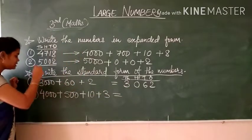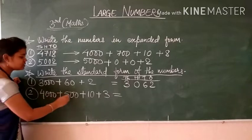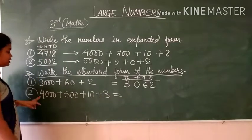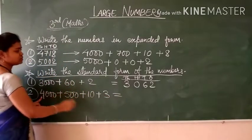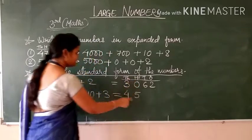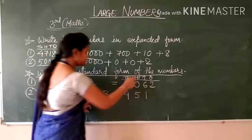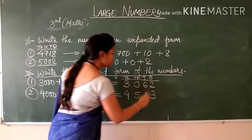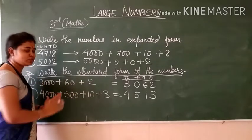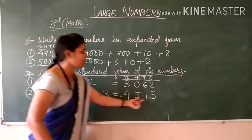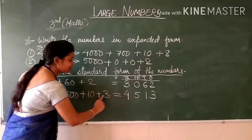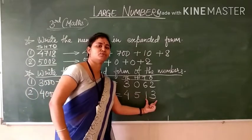Second example: 4,000 + 500 + 10 + 3. Same pattern — put 4 in the thousands place, 5 in the hundreds place, 1 in the tens place, and 3 in the ones place. Remember, you have to write only the first digit of each place value, not the whole number. For example, 10 is in the tens place so write 1, not 10. So the answer is 4,513.